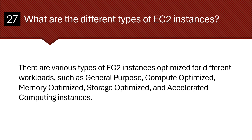What are the different types of EC2 instances? There are various types of EC2 instances optimized for different workloads, such as general purpose, compute optimized, memory optimized, storage optimized, and accelerated computing instances.